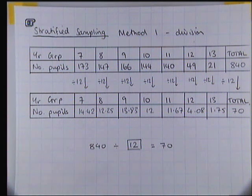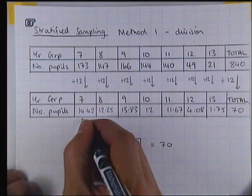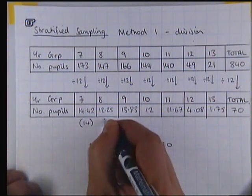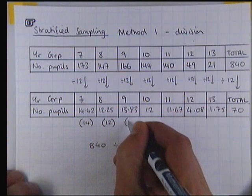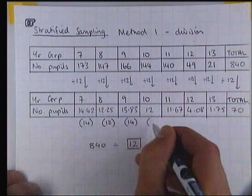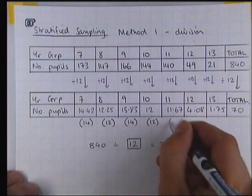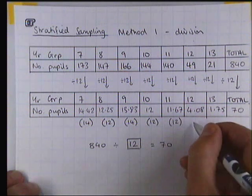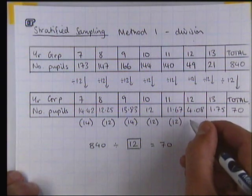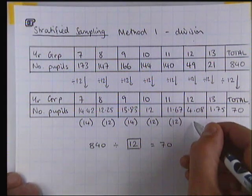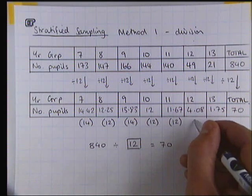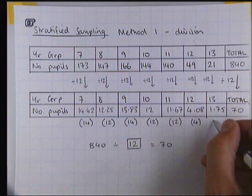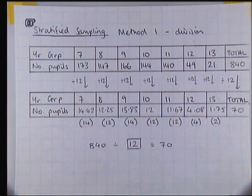Obviously we can't choose 14.42 people from year 7, so we need to do a bit of rounding here. What I'm going to do is follow the normal rules for rounding and make sure all of these numbers are rounded up or down appropriately. Up if the first decimal place is 5 or more, and down if the first decimal place is less than 5.